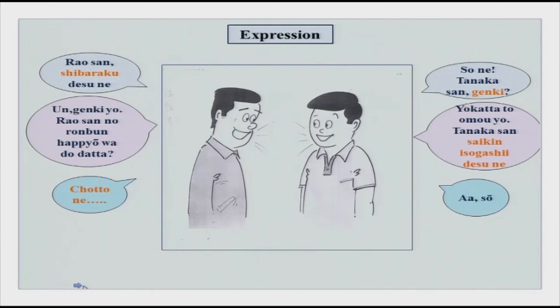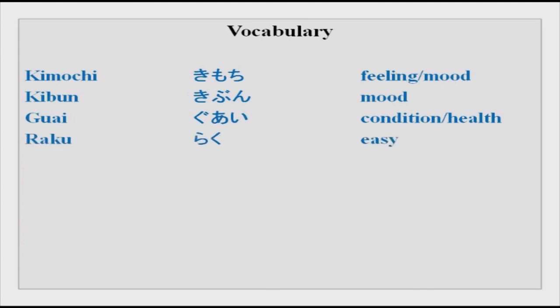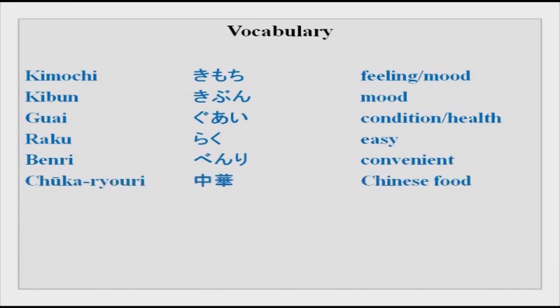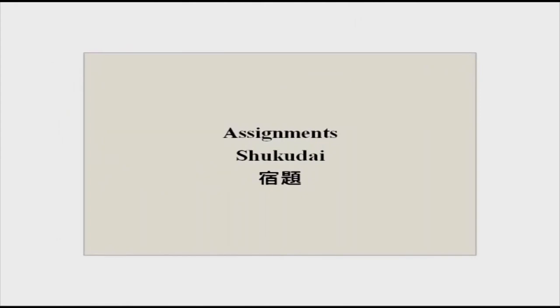Now your vocabulary: kimochi and kibun almost mean the same thing. Guai is general condition of health. Raku is easy. Benri is convenient. Chuuka is Chinese food or cuisine. Tsugi is next. Kondo is next time. Kono aida is 'the other day' — a particular day. Aida is in between, interval, or space. You can use these words to make sentences.